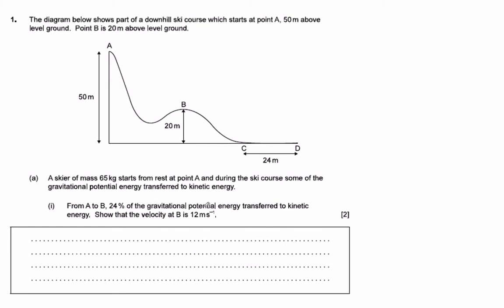From A to B, 24% of the gravitational potential energy is transferred to kinetic energy. Show that the velocity is 12 meters per second.